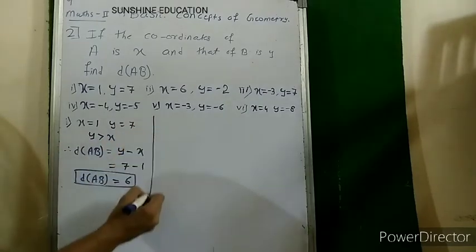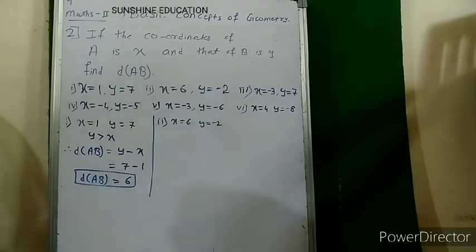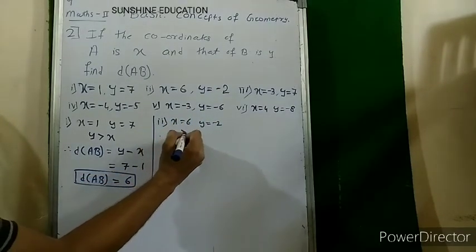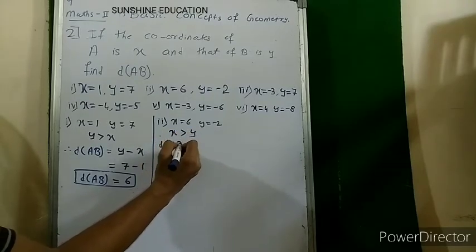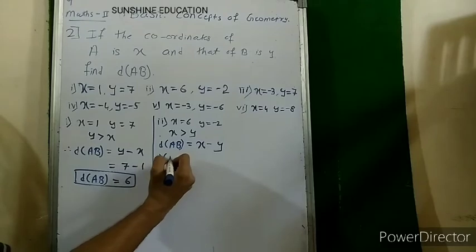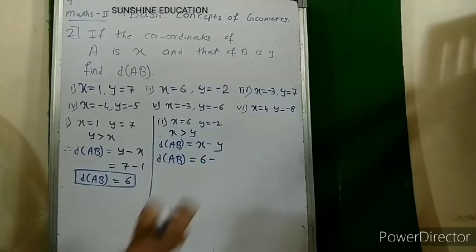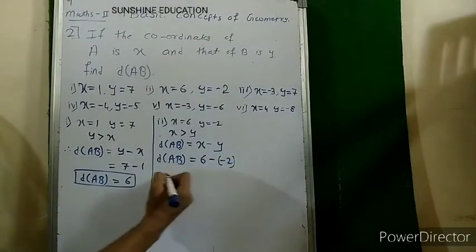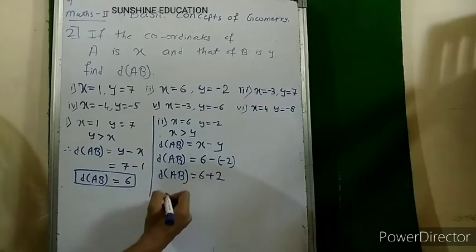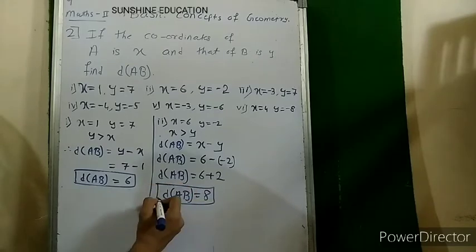Second sub-question: x = 6 and y = minus 2. Since positive is greater than negative, x is greater than y. Distance AB = x minus y = 6 minus (minus 2) = 6 plus 2 = 8.